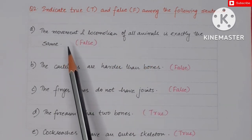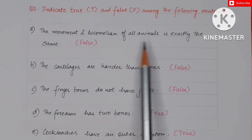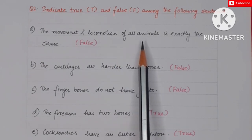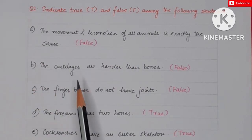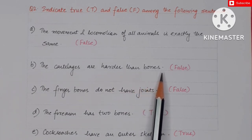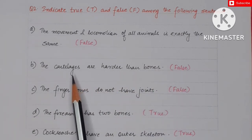So this is a false statement. The movement and locomotion of all animals is not the same. The next is: the cartilages are harder than the bones. Are cartilages hard than bones? No, this is false statement. Rather bones are harder than the cartilages. Cartilages are the flexible part of the skeleton.